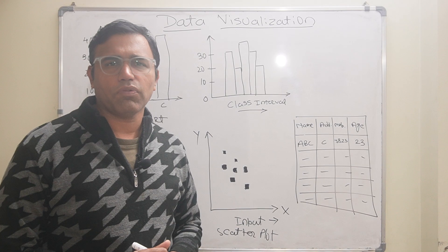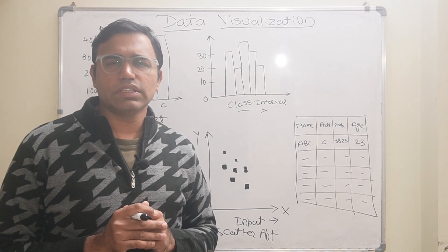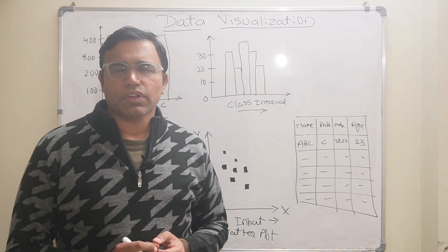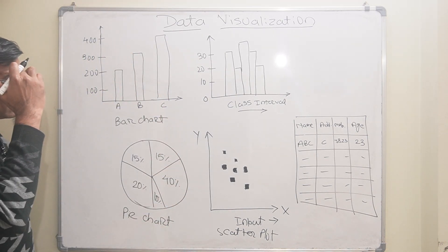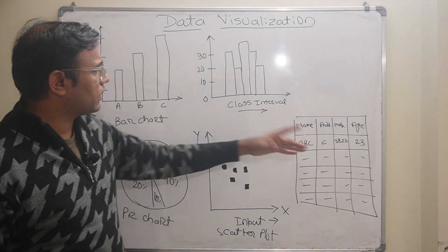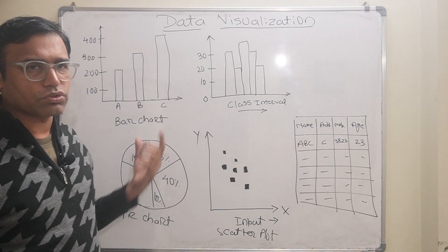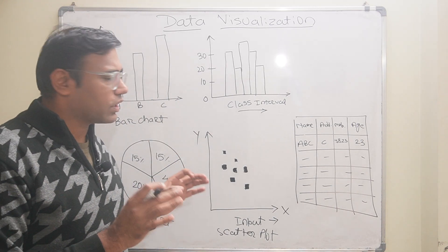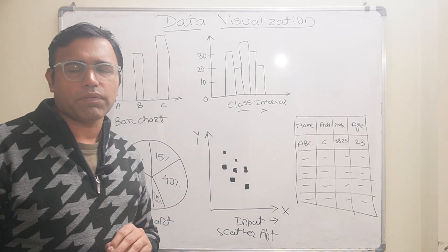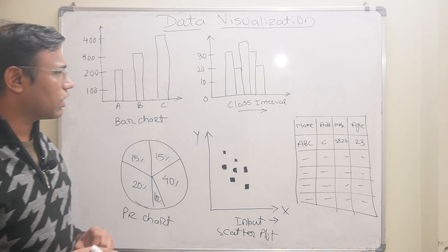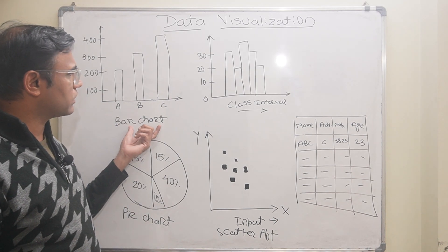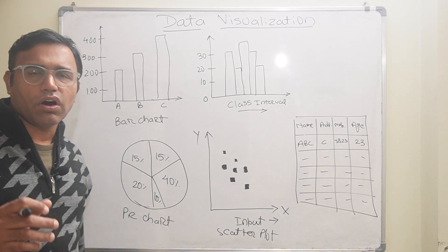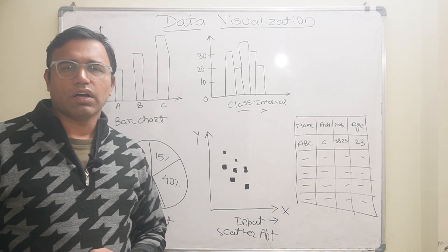The solution is: if you represent the same data in the form of a visual format, then it is very easy to analyze, interpret, and quickly make decisions. Representing data in graphical format is called data visualization. There are various types — bar chart, histogram, pie chart, scatter plot, heat map, map, and more.